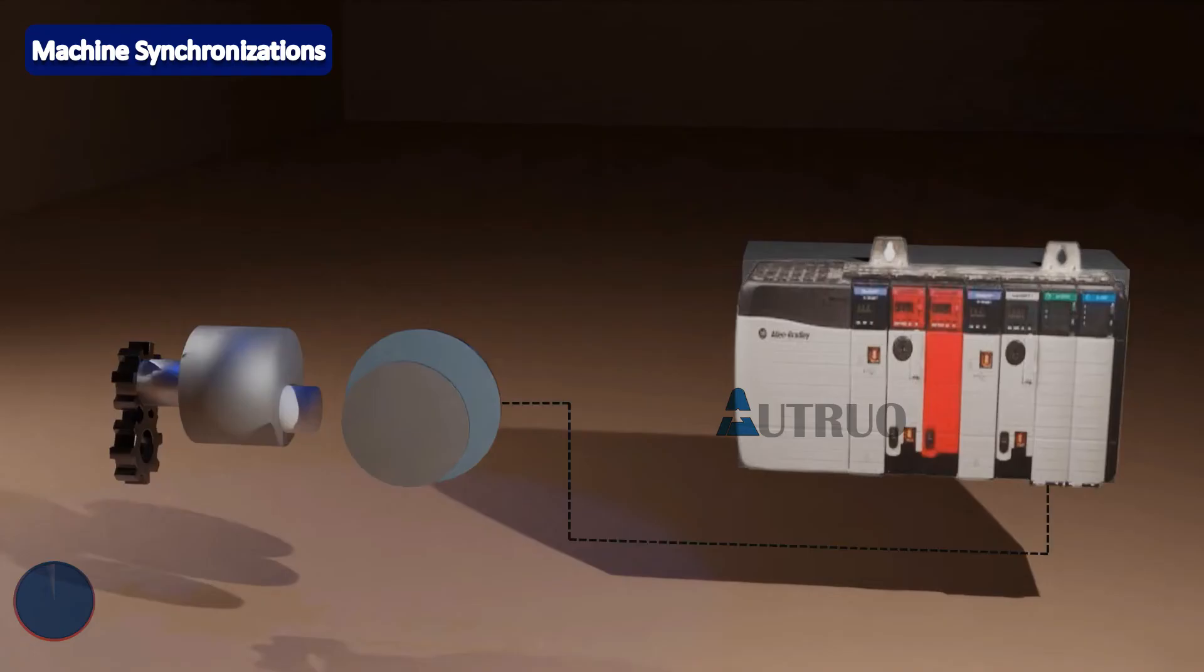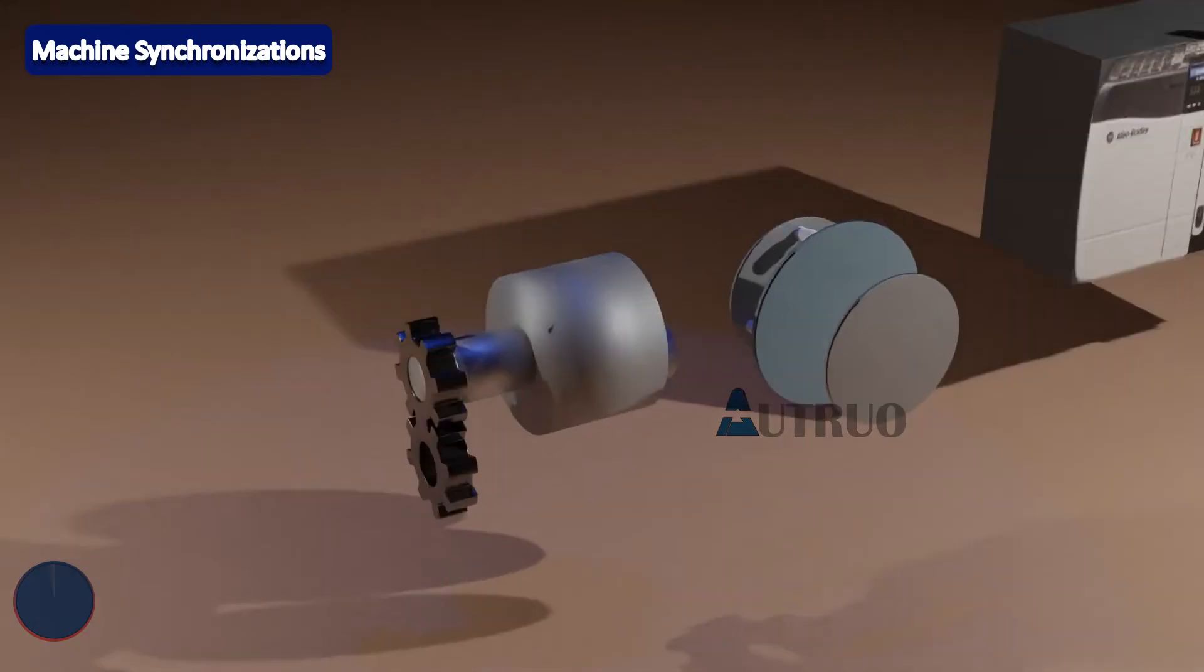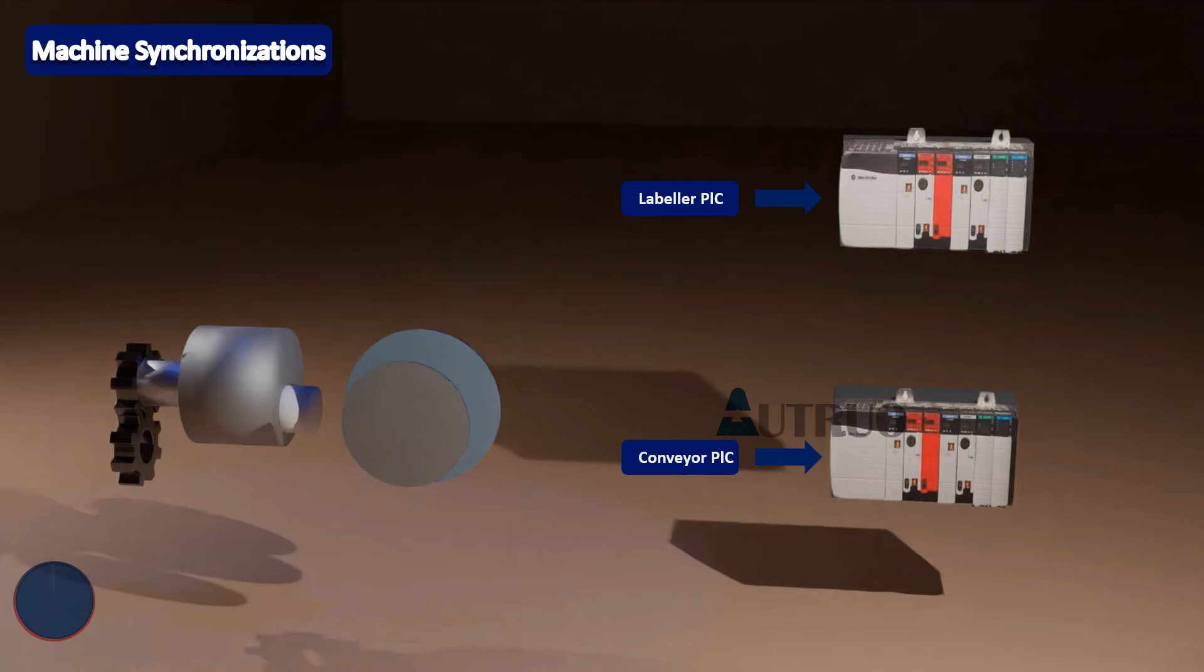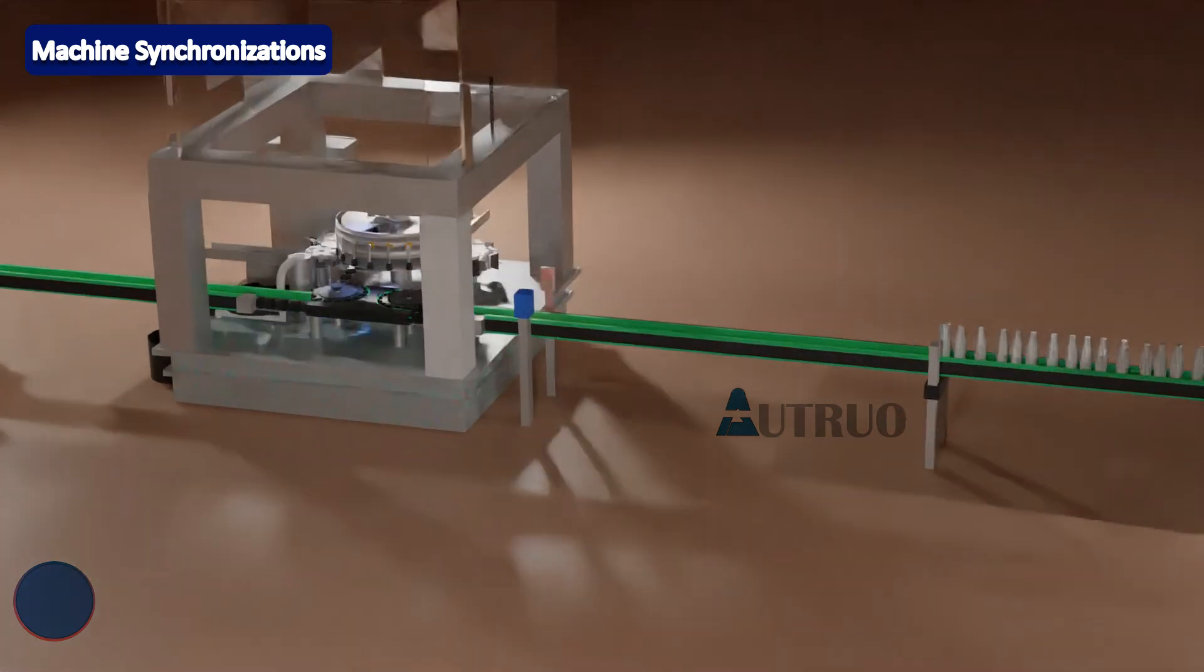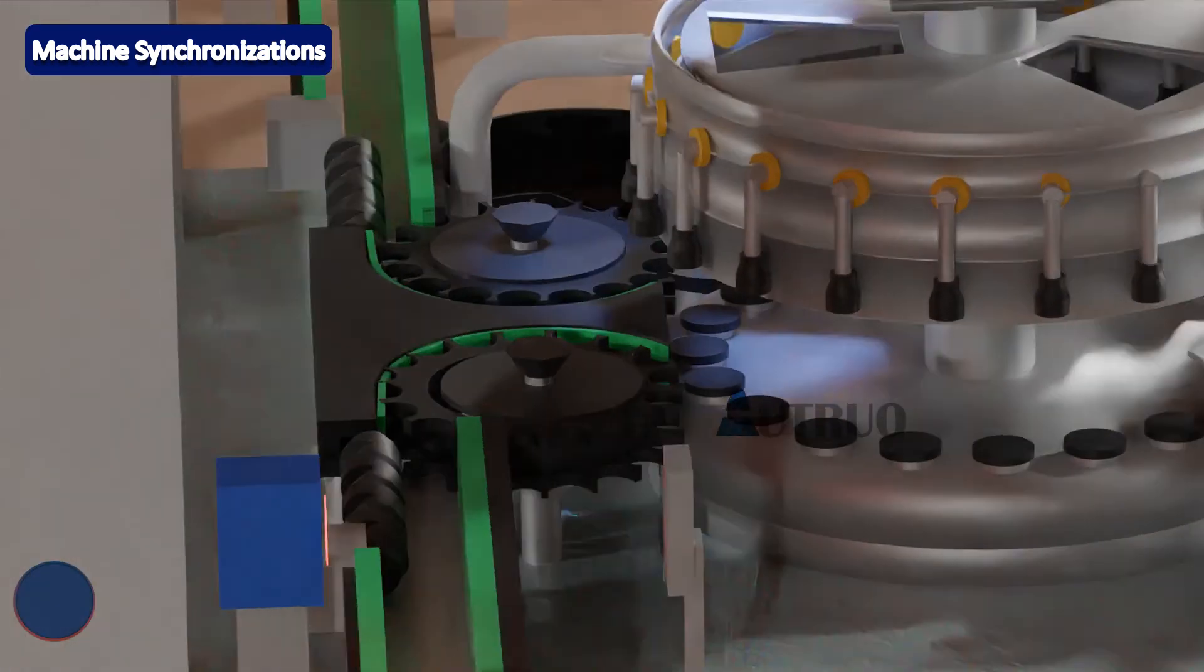This means apart from the fact that the encoder signal is transmitted to the machine PLC, the signals are also shared with external machines. And in this case, we are dealing with a conveyor system. The signal sent to this machine will be used by the PLC of the conveyor system to either speed up the conveyor in relation to the lead machine or vice versa.